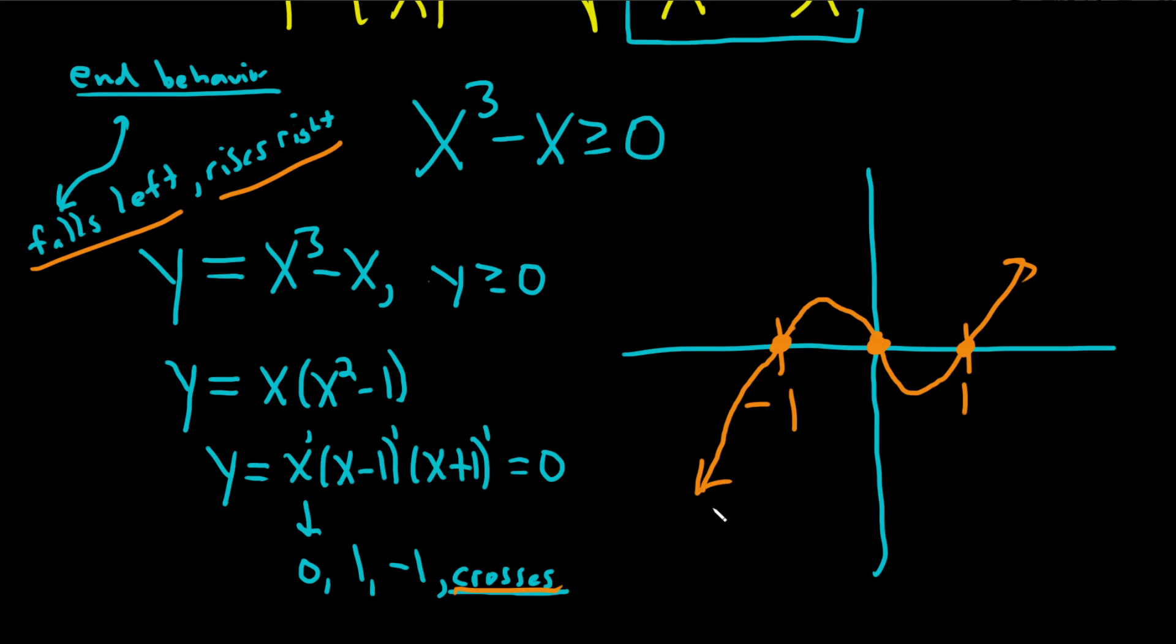Okay, now we can answer the original question, which was, when is it greater than or equal to 0? Right? So I'm going to use a different color so you can see. So here and here. Okay? And we're including 0, so it'll be negative 1 to 0, union, and then 1 to infinity. Beautiful way to find the domain.